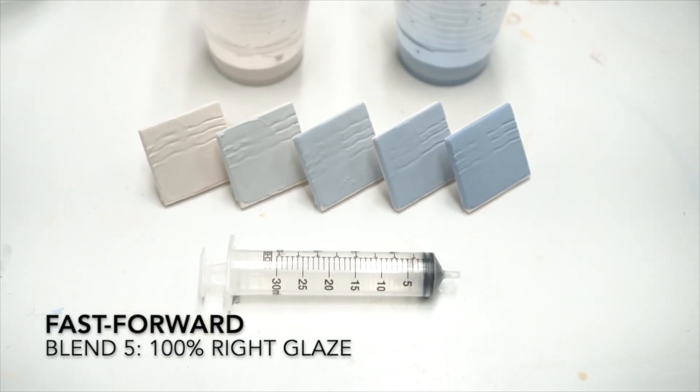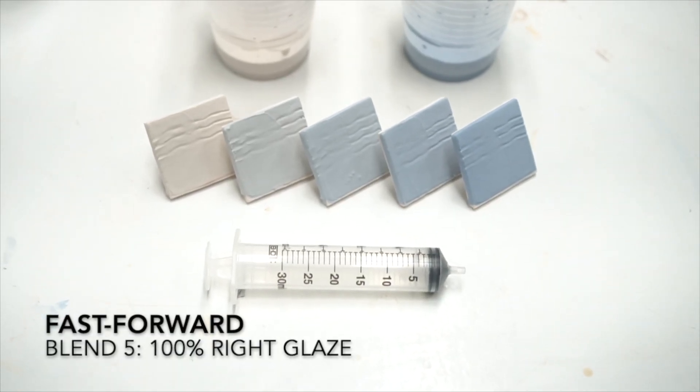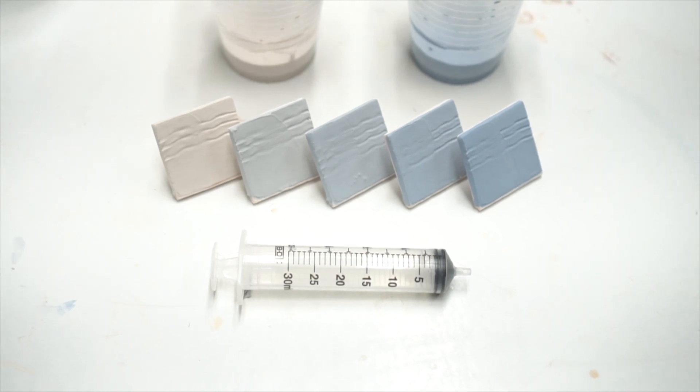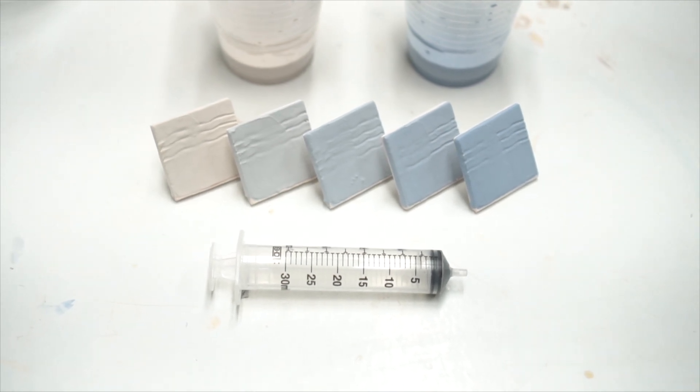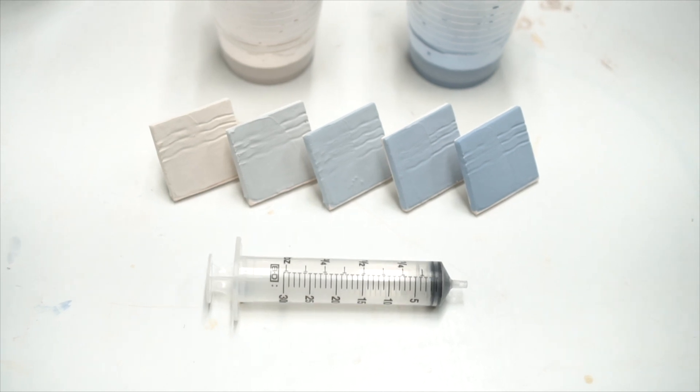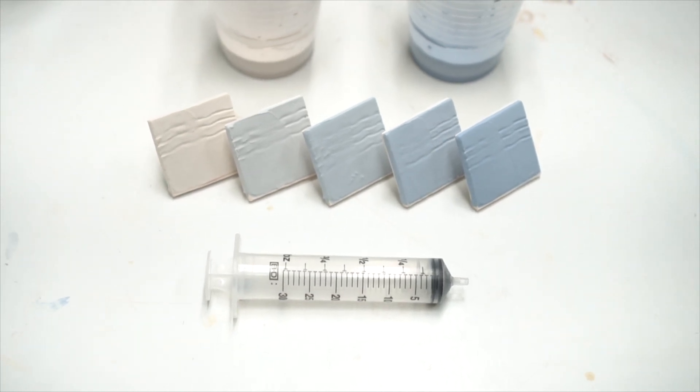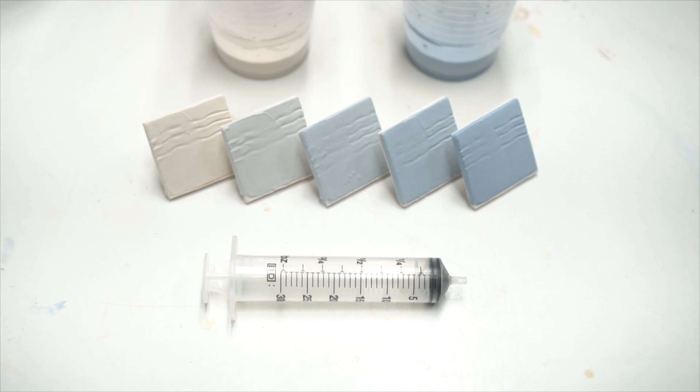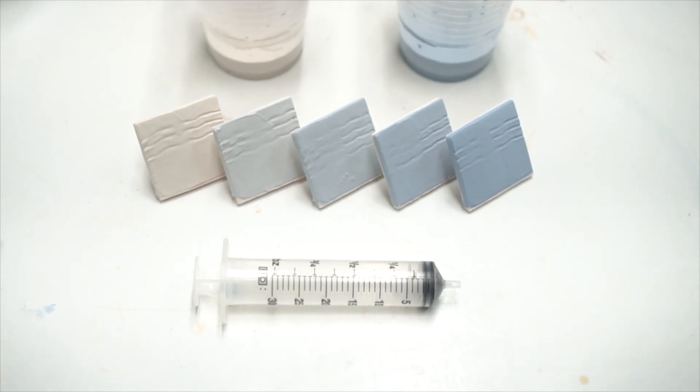You can see here the five test tiles that we just made, and it's obvious that we're blending from one glaze to another. When we're finished with the test tiles, we should see a very even and smooth gradient from one glaze to another. Of course, the colors are going to change a lot after the firing.